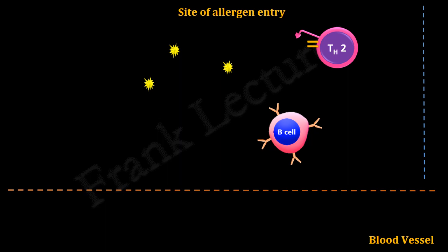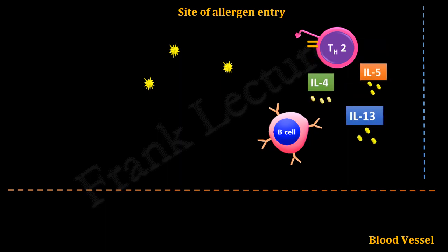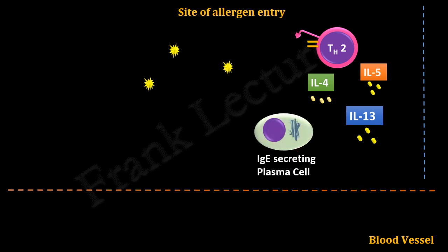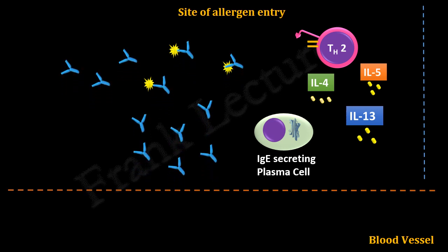The T helper type 2 cells start secreting large amounts of cytokines. The most important of these cytokines are interleukin-4, interleukin-5, and interleukin-13. These cytokines result in isotype switching of activated B cells. As a result, these B cells start production and secretion of IgE antibodies.